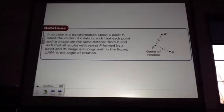Okay, rotations. Rotation is a transformation around a point P called the center of rotation such that each point and its image are the same distance from P and such that all angles with vertex P formed by a point and its image are congruent. So in the figure you have angle A, P, A prime as the angle of rotation.